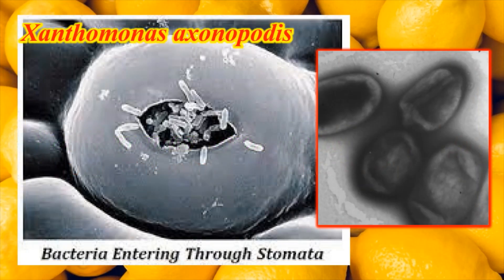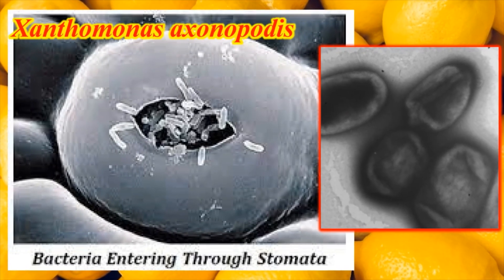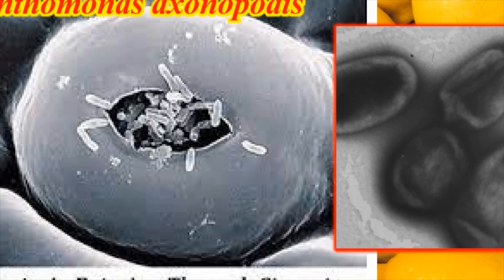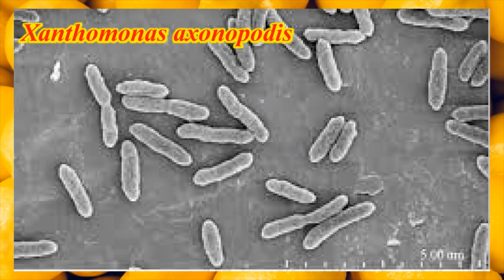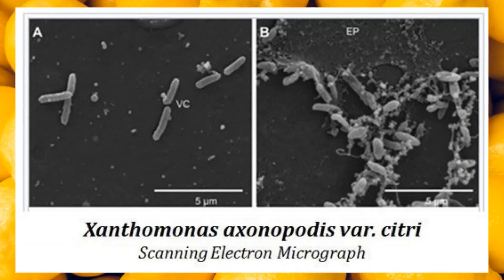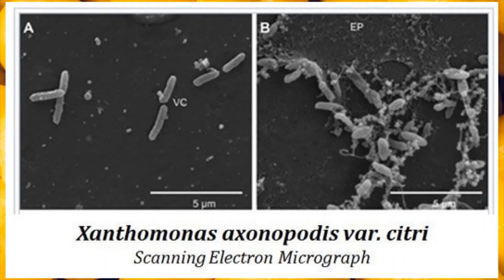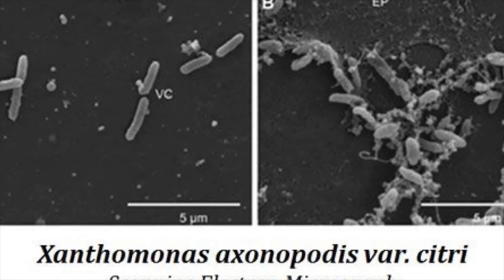Here you can see the pathogen, Xanthomonas axonopodis, entering the citrus plant through the stomata. This is a scanning electron micrograph where you can see the bacteria entering into the host plant through the stomata. This is the picture of the bacterium Xanthomonas, where you can see the gram-negative, rod-shaped structures of the pathogen.